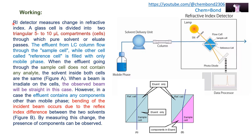The refractive index detector measures the change in refractive index. A glass cell is divided into two triangular 5 to 10 microliter compartments through which the pure solvent and the eluate pass. One compartment is the reference cell and the other is the sample cell. The effluent from the LC column flows through the sample cell, while the reference cell is filled with only the mobile phase. When the effluent going through the sample cell does not contain any analytes, the conditions inside both cells are the same, as shown in Figure A.